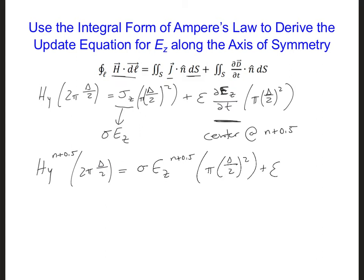Pi delta over 2 squared, plus epsilon, and we have the usual EZ n plus 1 minus EZ n over delta t, and that will be multiplied by pi delta over 2 squared.